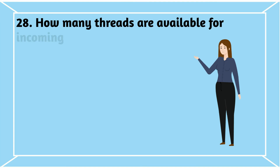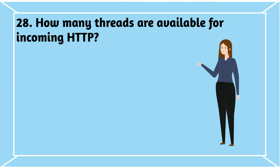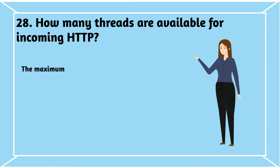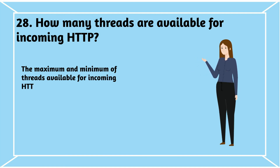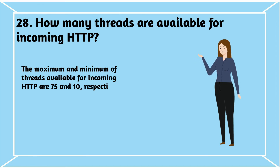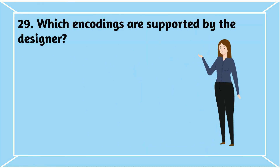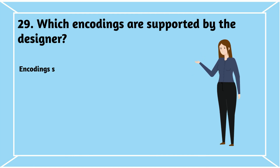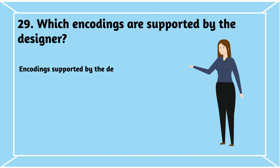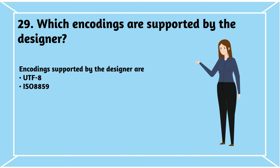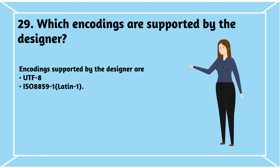Question 28: How many threads are available for incoming HTTP? The maximum and minimum threads available for incoming HTTP are 75 and 10, respectively. Question 29: Which encodings are supported by the designer? Encodings supported by the designer are UTF-8 and ISO 8859-1.